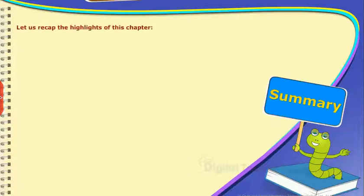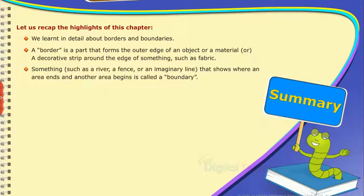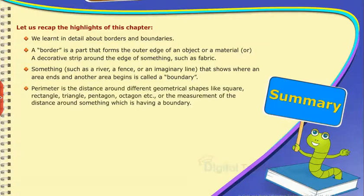Summary, let us recap the highlights of this chapter. We learnt in detail about borders and boundaries. A border is a part that forms the outer edge of an object or a material or a decorative strip around the edge of something such as fabric. Something such as a river, a fence or an imaginary line that shows where an area ends and another area begins is called a boundary. Perimeter is the distance around different geometrical shapes like square, rectangle, triangle, pentagon, octagon, etc., or the measurement of the distance around something which is having a boundary.